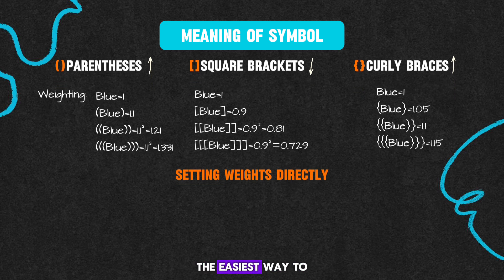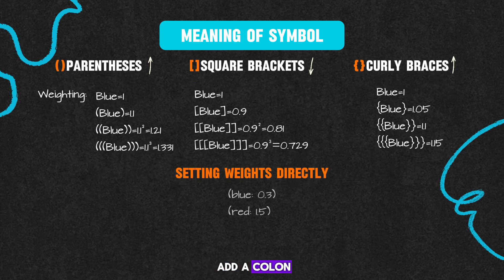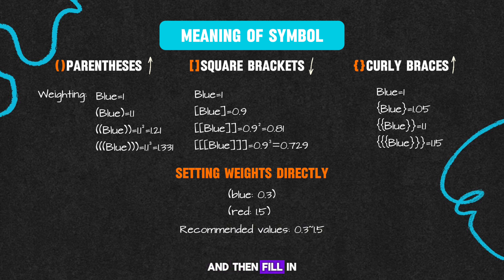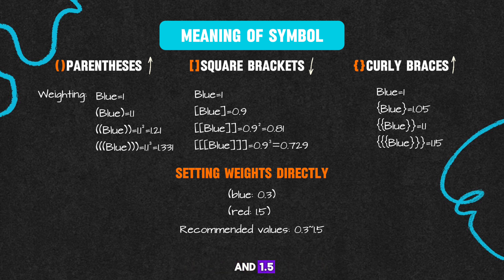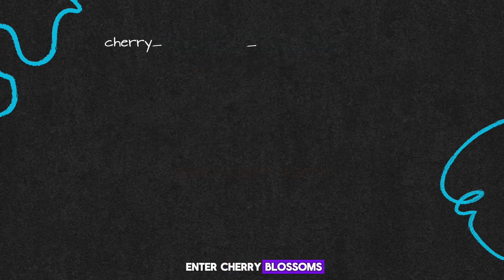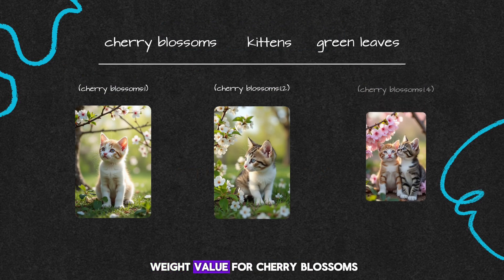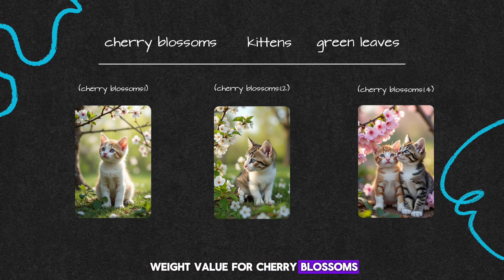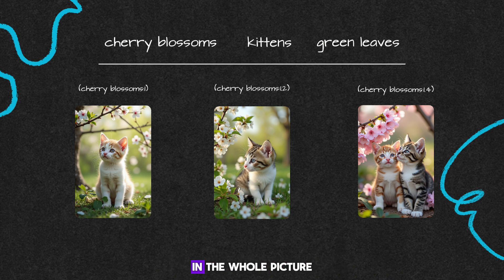The easiest way to adjust weights is to add a colon after the hint word in parentheses, and then fill in the desired weight value directly after the colon. It's recommended to set this value between 0.3 and 1.5. For example, if you enter cherry blossoms, kittens, and green leaves, and set a different weight value for cherry blossoms, you can control the proportion of cherry blossoms in the whole picture.